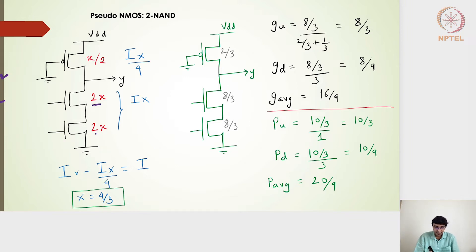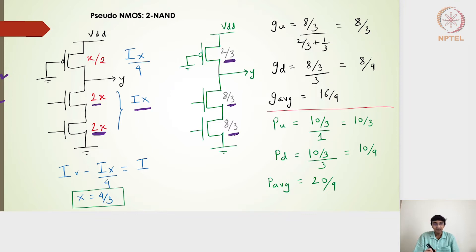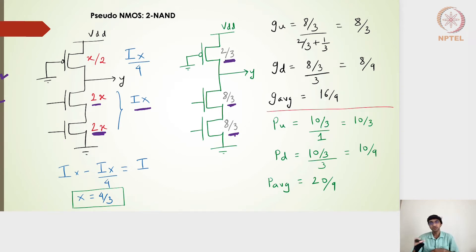If we size the two pull-down transistors individually as 2x and 2x, the equivalent transistor will be of size x. Two transistors of 2x in series give a current of i·x, while x/2 gives a current of ix/4. This gives us 2/3 for the PMOS (which is x/2), and 8/3 and 8/3 for the two NMOS transistors (which are 2x each), derived from the pseudo-NMOS inverter sizes.